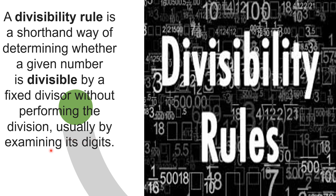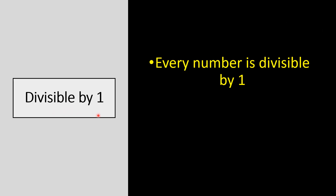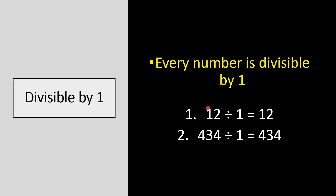Usually by examining its digits — it means without doing the actual division, we can find out if any number is divisible by a given number or not. Every number is divisible by 1 in this universe. So it is very easy. 12 divided by 1 equals 12. 434 divided by 1 equals 434.